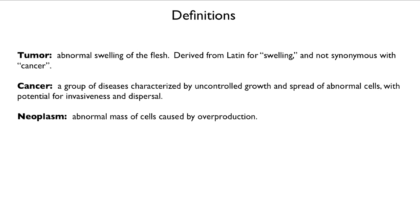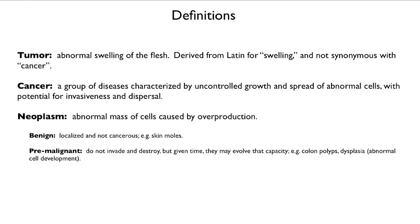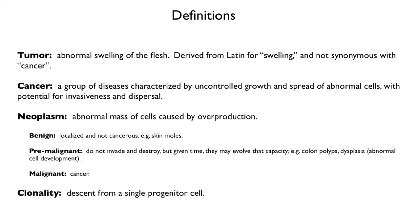A neoplasm is simply an abnormal mass of cells caused by overproduction — that's the first initial growth stage. It can be benign; for example, skin moles are neoplasms. Pre-malignant neoplasms don't invade and destroy, but given enough time they might evolve that capacity — things like colon polyps picked up in colonoscopies. A malignant neoplasm is a fully developed cancer. Clonality means descent from a single progenitor cell, and the clonal theory of cancer evolution is central to our modern understanding of cancer.